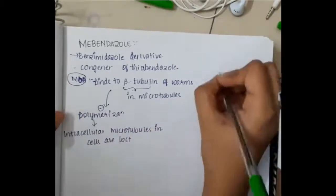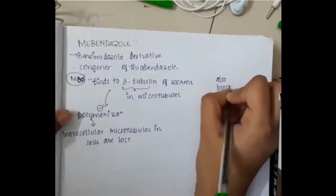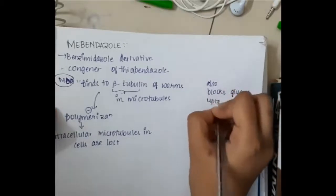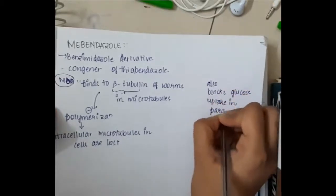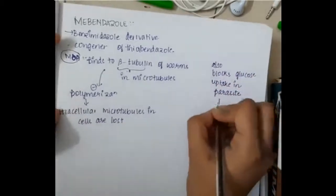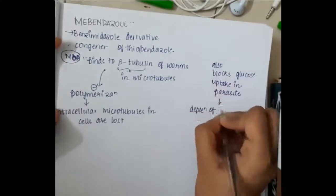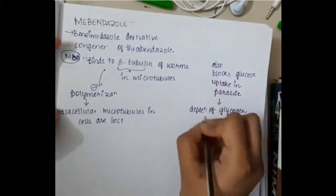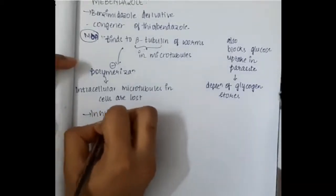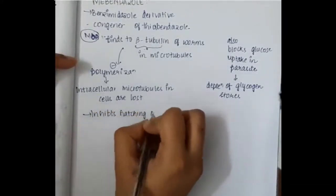Then this mebendazole also blocks the glucose uptake in parasites. If it blocks the glucose uptake in parasites, it will cause depletion of glycogen stores.